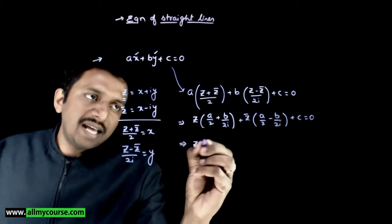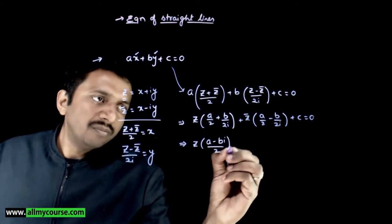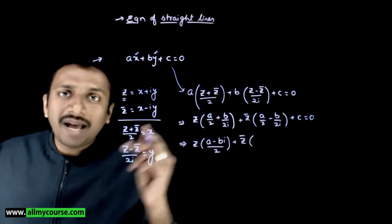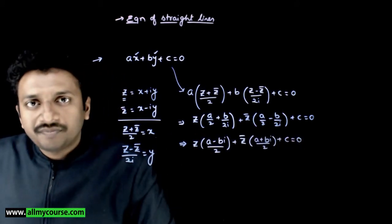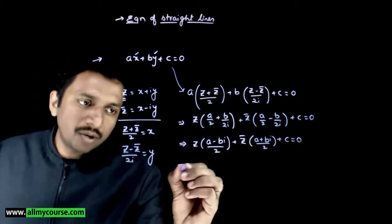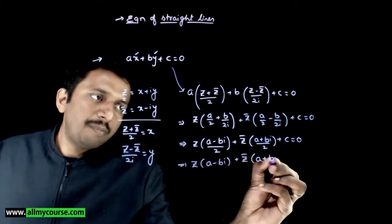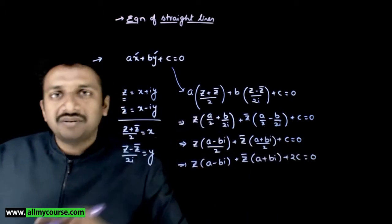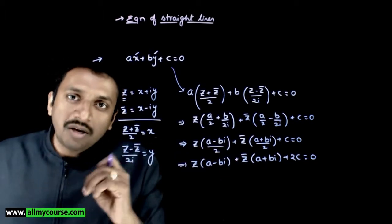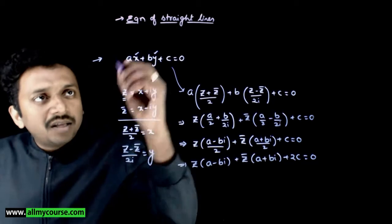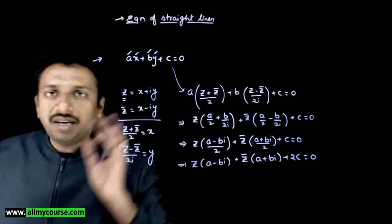Since 1/i equals minus i, this simplifies to z times (a minus bi)/2 plus z̄ times (a plus bi)/2 plus c equals zero. Multiplying through by 2 to clear the denominators, we get z times (a minus bi) plus z̄ times (a plus bi) plus 2c equals zero. So the Cartesian coefficients a and b give rise to complex numbers a plus bi and a minus bi in the Argand plane form.